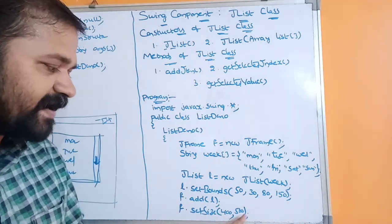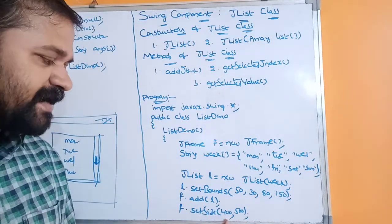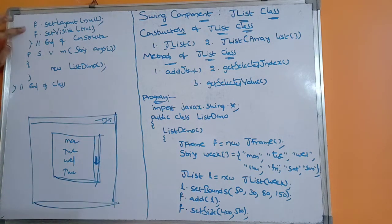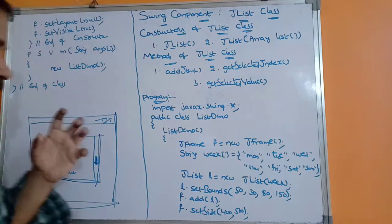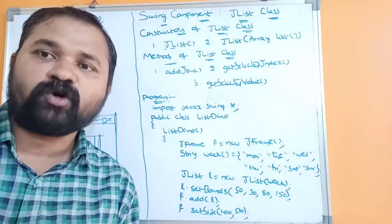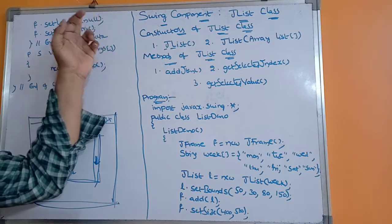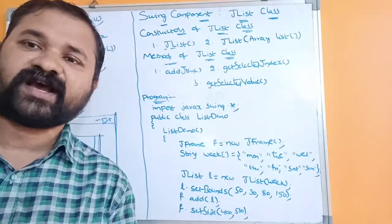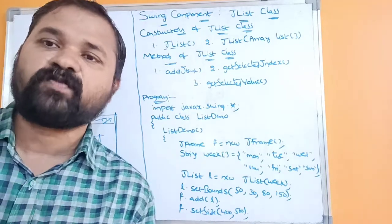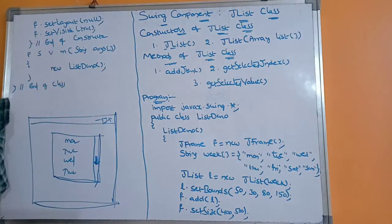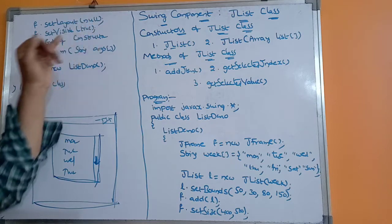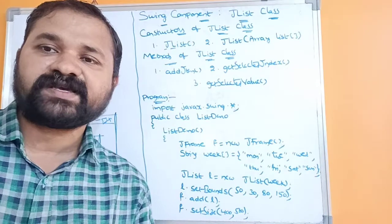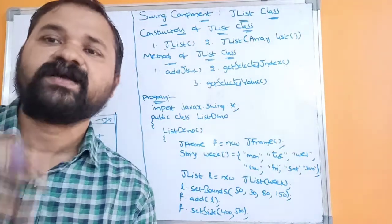Next, f.setSize(400, 500) — where 400 specifies the width of the frame and 500 specifies the height. Next, f.setLayout(null) — in this program we are not using any layout manager, so null indicates we are not using layouts such as CardLayout, FlowLayout, BorderLayout, or GridLayout. Next, f.setVisible(true) — by default the frame is in invisible mode, so when this statement is executed the frame becomes visible.